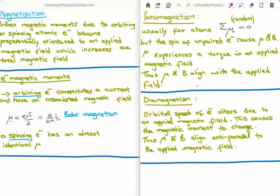Let me define magnetization. This is when the magnetic moments due to orbiting or spinning atomic electrons become preferentially oriented to an applied magnetic field, which increases the total magnetic field. We essentially have two types of magnetic moments, because a current loop constitutes a magnetic dipole which has a magnetic moment.